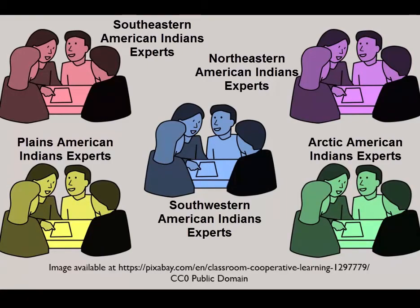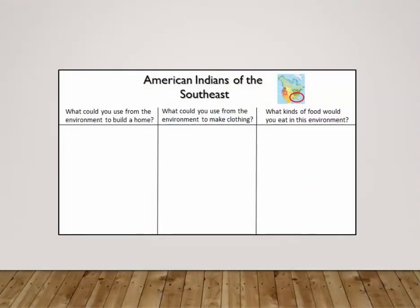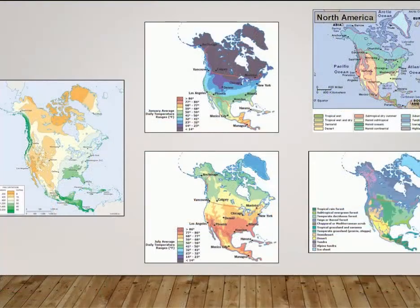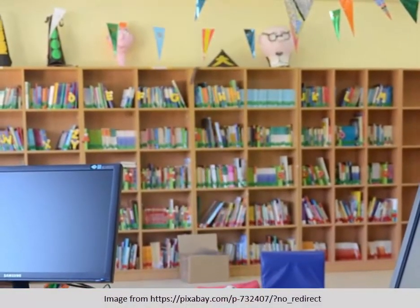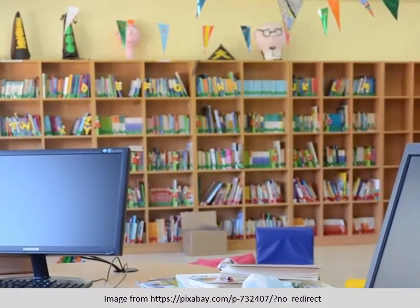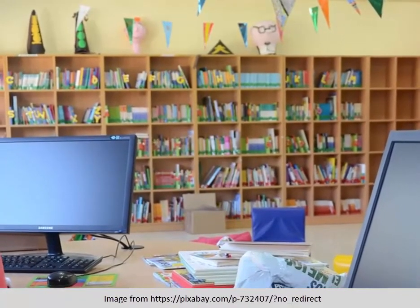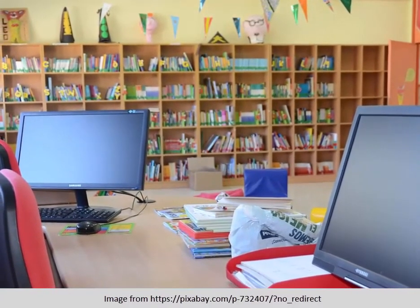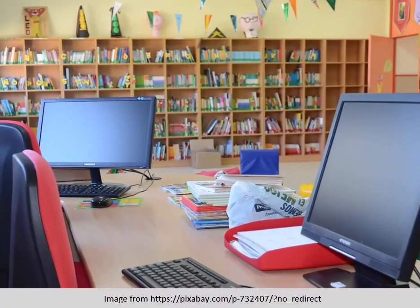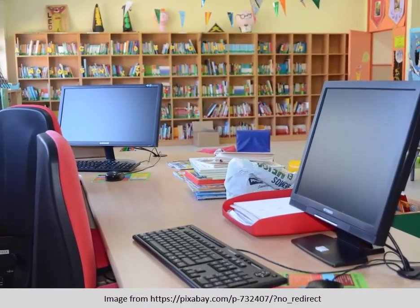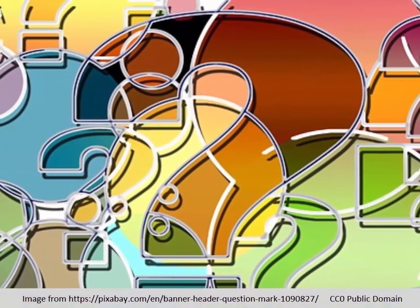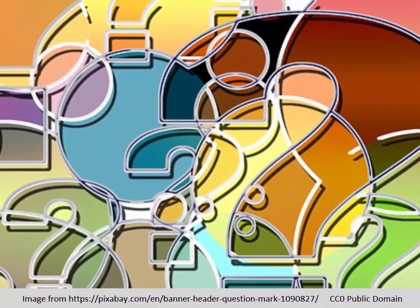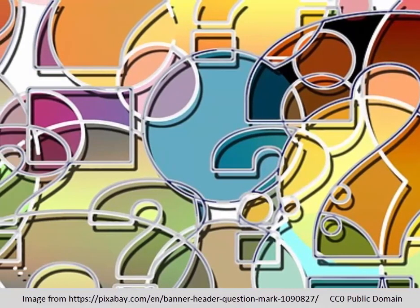Once students have made predictions about how American Indians in each region lived based on their work with image collections and different types of maps, they can explore additional information from text resources including textbooks, books found in the school media center, online encyclopedias, or videos including those offered through Discovery Education. All of their research at this point works to confirm or refute the predictions they made about life in each region. This increases student engagement in the content and makes their learning far more lasting than if they had simply read about the American Indians living in each region at the start of the unit. Using inquiry methods to help students learn this content allows them to work and think in some of the same ways historians and geographers do. If you would like to see more examples of how to use inquiry-based learning to enhance your social studies classroom, consider viewing the other instructional videos from the Georgia Department of Education for third grade.